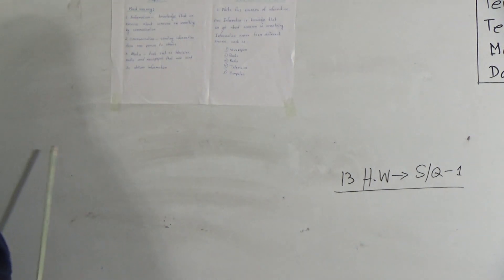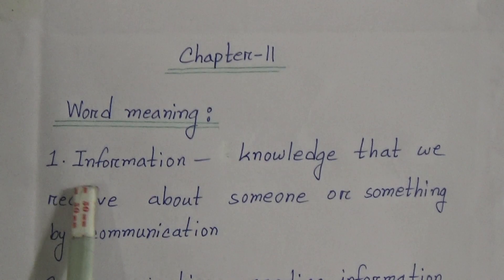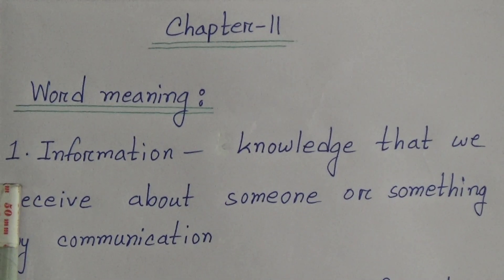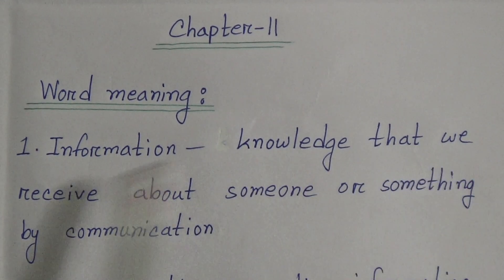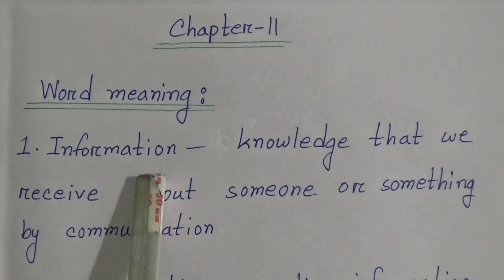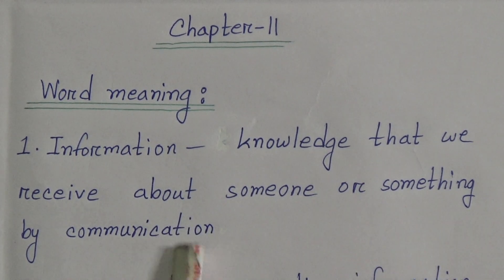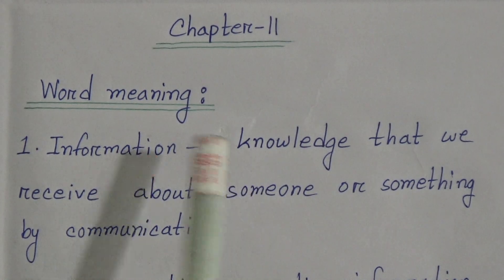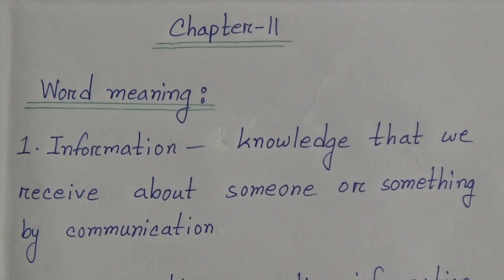I have written here 3 words and meanings and here is only one short question of this chapter. Let's see the word meanings here. Word number one is Information. The meaning of Information is: knowledge that we receive about someone or something by communication. Note that we are not using a capital letter and we are not using a full stop for word meaning.